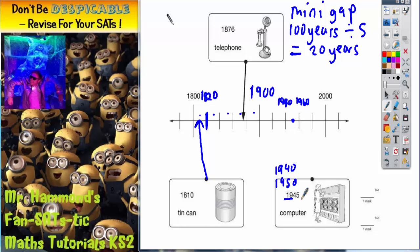And actually, 1945 would be between 1950. So 1945 would be there. So we need to join it up to that first dot. There we go.